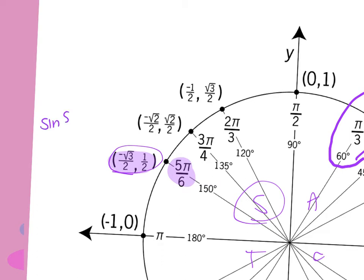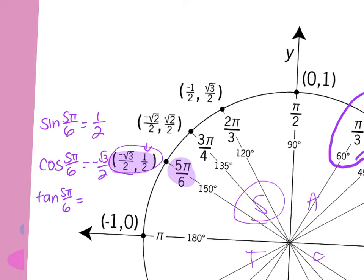So if I ask for the sine of 5 pi over 6, I'm grabbing the y, which is 1 half. If I ask for the cosine of 5 pi over 6, the answer is negative root 3 over 2. And the tangent of 5 pi over 6: y over x is 1 half over negative root 3 over 2. Keep, change, flip — I get negative 1 over root 3, which becomes negative root 3 over 3.